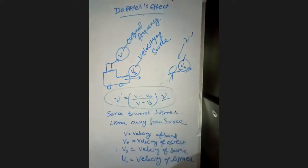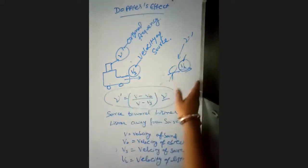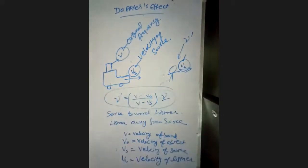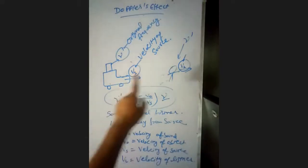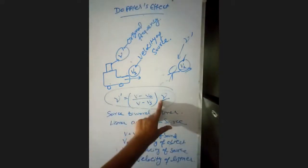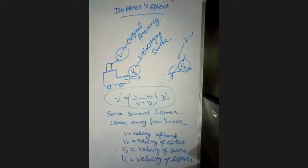According to this formula, we can find out what frequency a person will hear when traveling from one point to another. When there is a relative motion between source and listener, the real frequency and apparent frequency will be different.